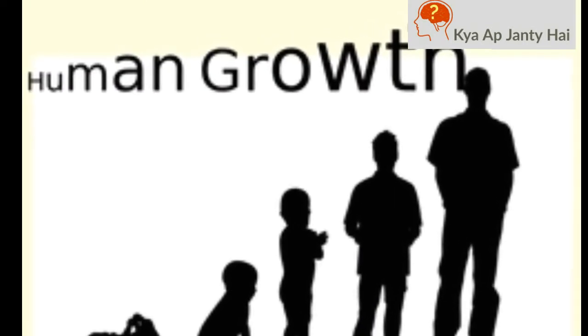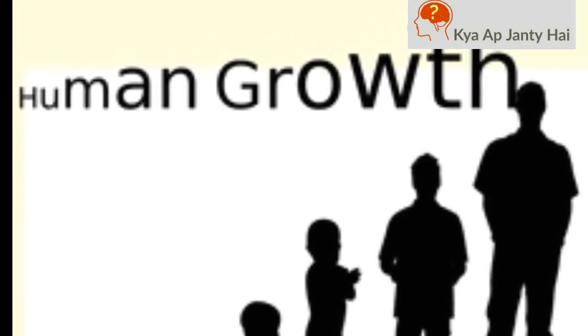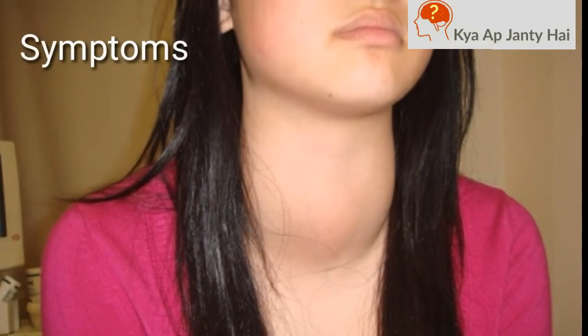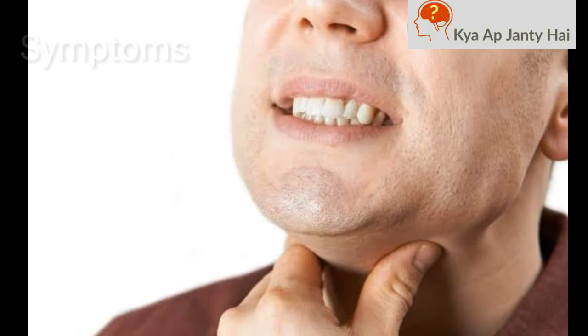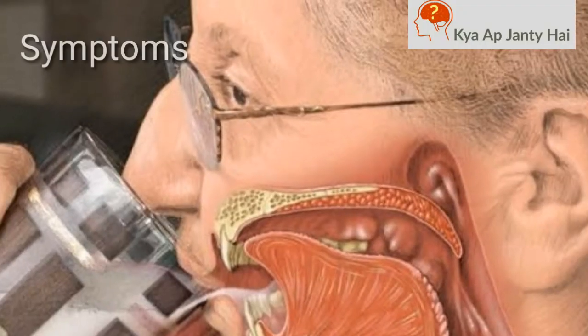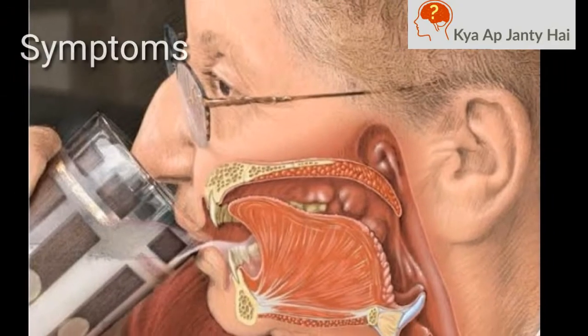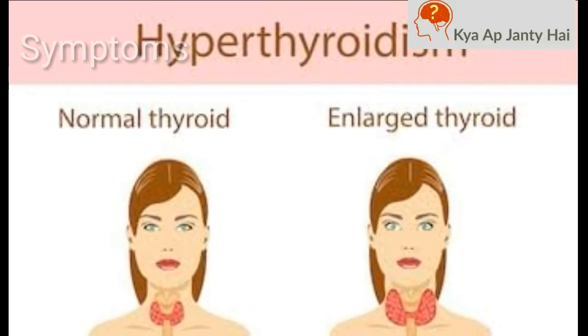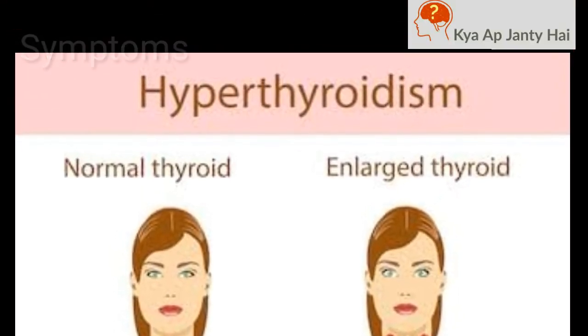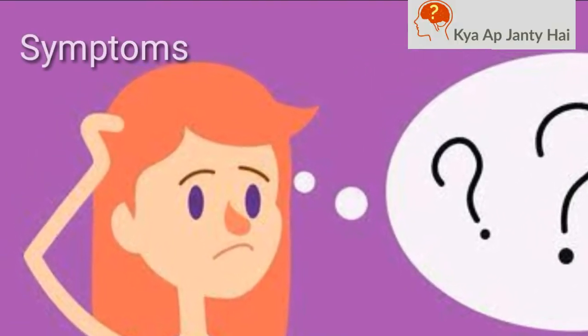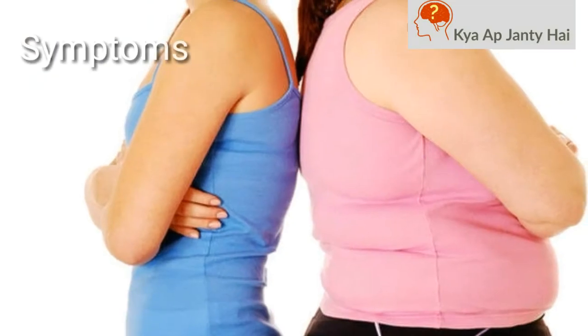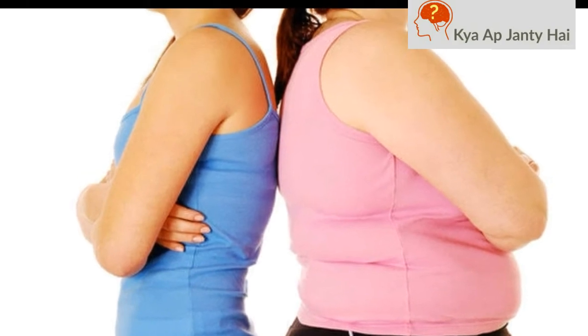The thyroid gland regulates your growth, height, and metabolism. Most common symptoms of goiter are swelling of the neck, throat tightness, cough, hoarseness, and trouble swallowing. If goiter is caused by hypothyroidism, then symptoms include constipation, forgetfulness, hair loss, and weight gain.